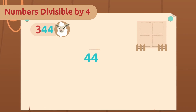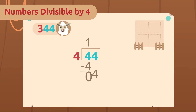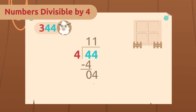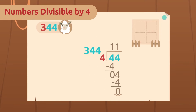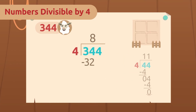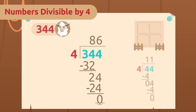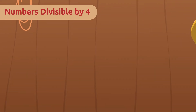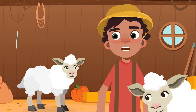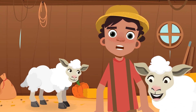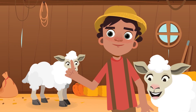Let's try dividing 44 by 4 and see if the remainder is zero. Yes! The remainder is zero, which means that our original number, 344, is also divisible by four. Awesome — all the stables will be full! I'll have to work hard before winter comes. I don't want my woolly friends to be cold. Come on, let's go to the chicken area now.